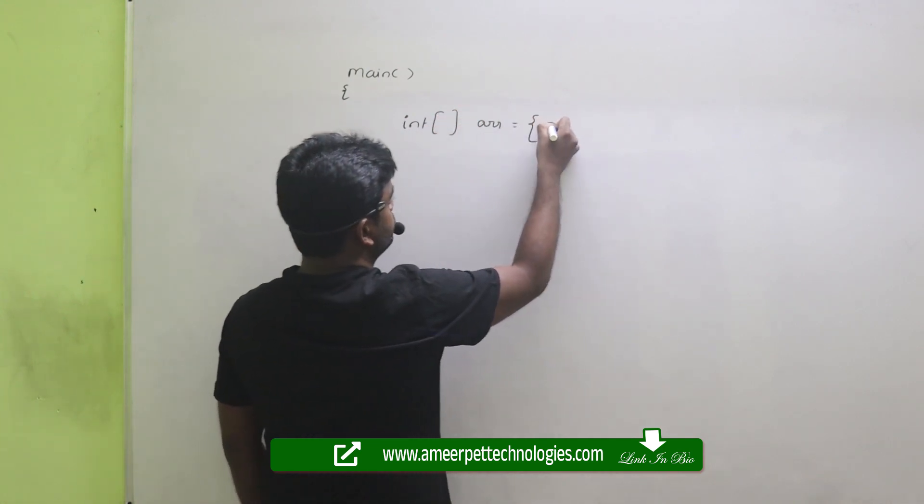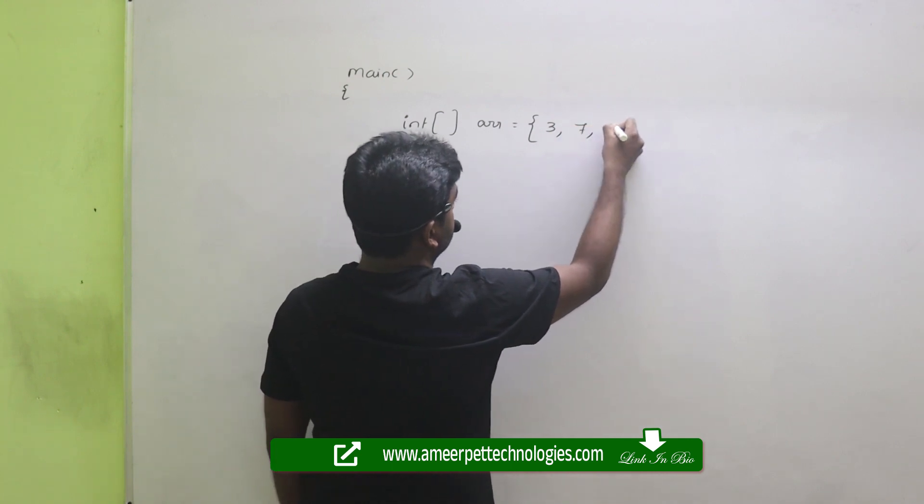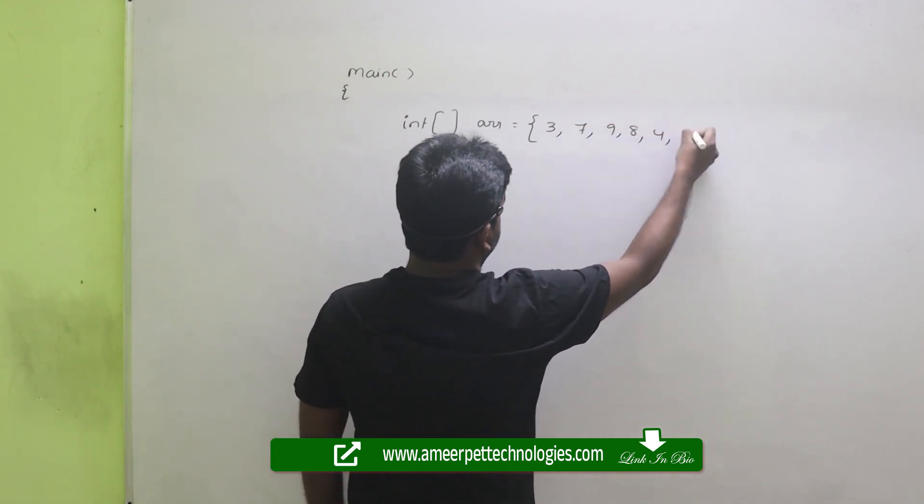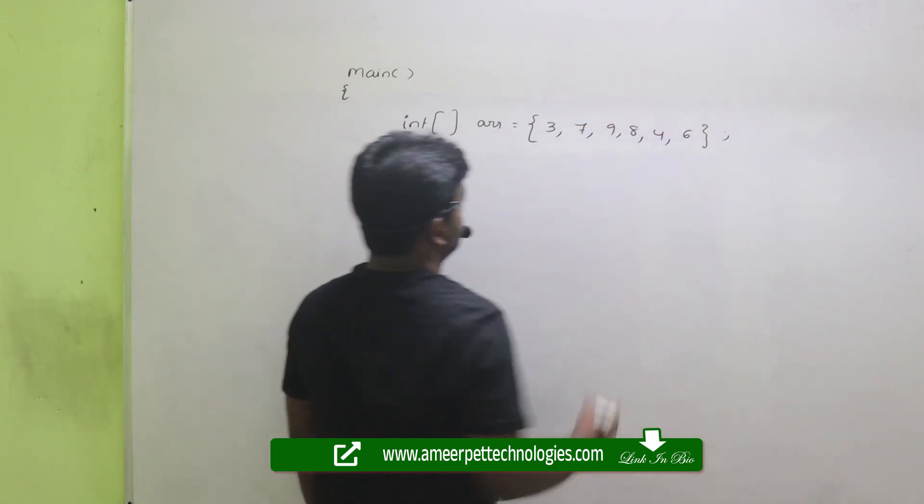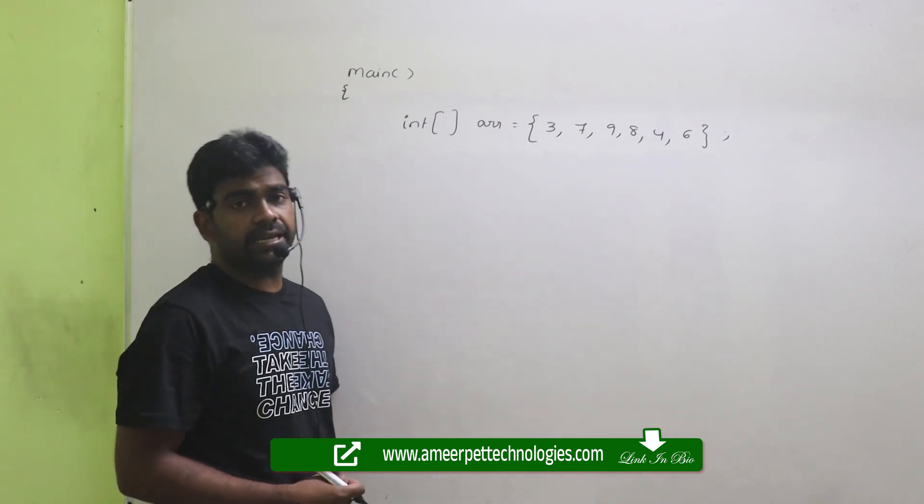ARR with some values - 3, 7, 9, 8, 4, 6. Suppose I am taking an array like this.